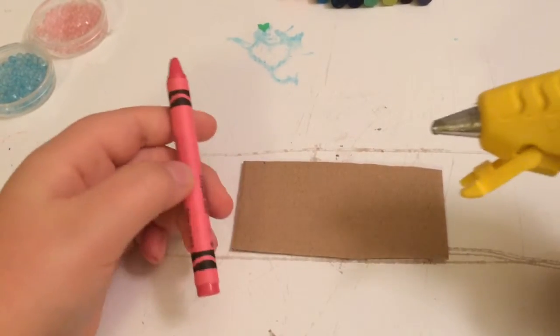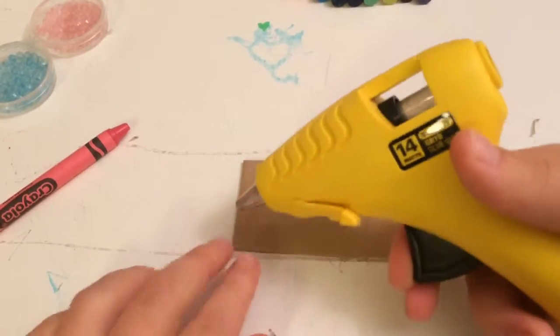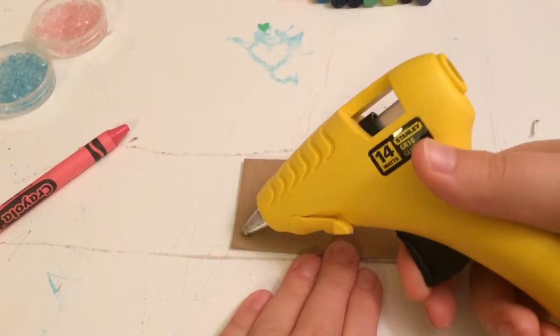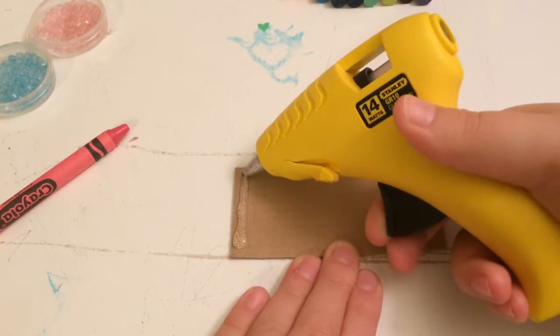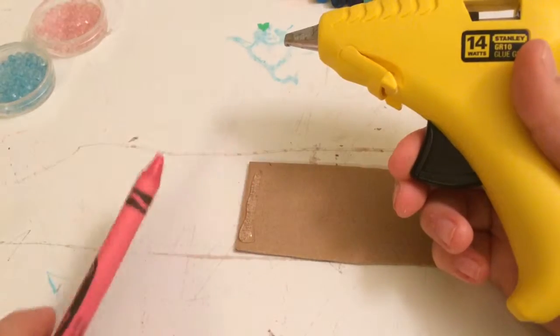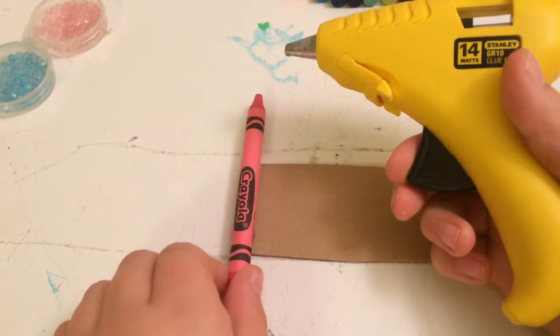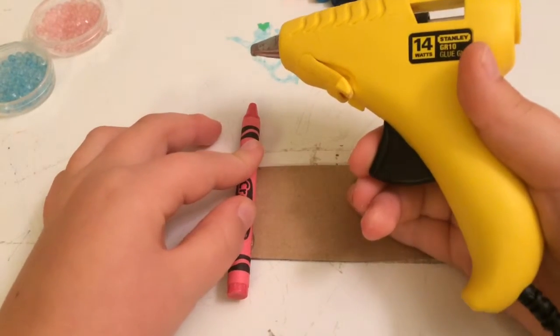You're going to start by getting your cardboard and your crayon, and you're gonna put down a hot glue strip so you can place your crayon on it. And then I would do it facing the crayon name up so it looks a little bit prettier, and I'm going to hold it down.